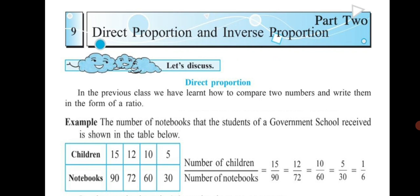we have learnt how to compare two numbers and write them in the form of a ratio. For example, the number of notebooks that the students of a government school received is shown in the table below. 15 children received 90 books, 12 children 72 notebooks,